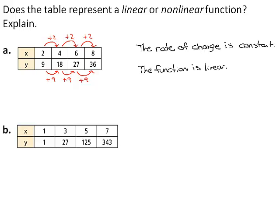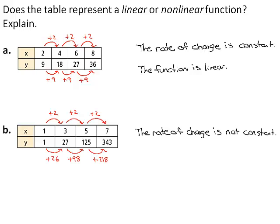Part B. As x increases by 2, y increases by different amounts. So the rate of change is not constant. And because a nonlinear function does not have a constant rate of change, the function is nonlinear.